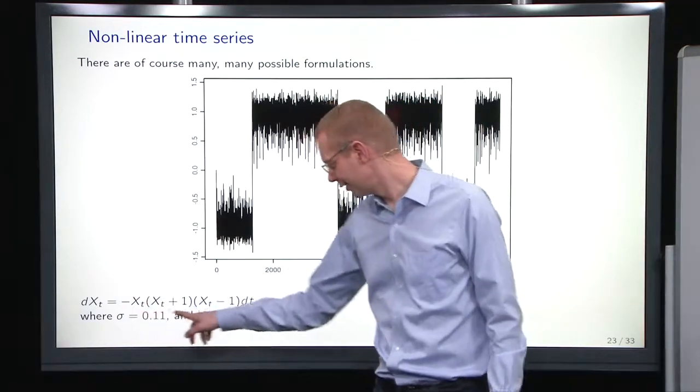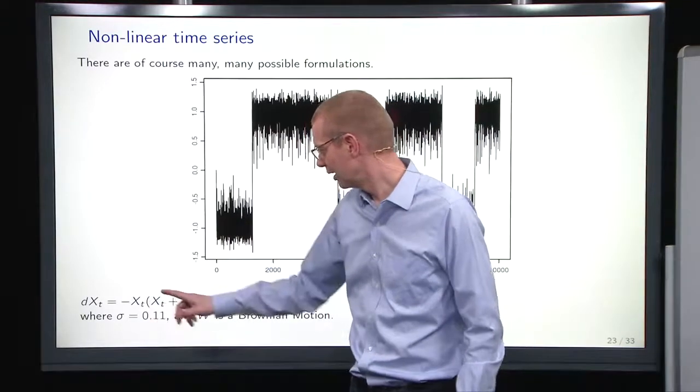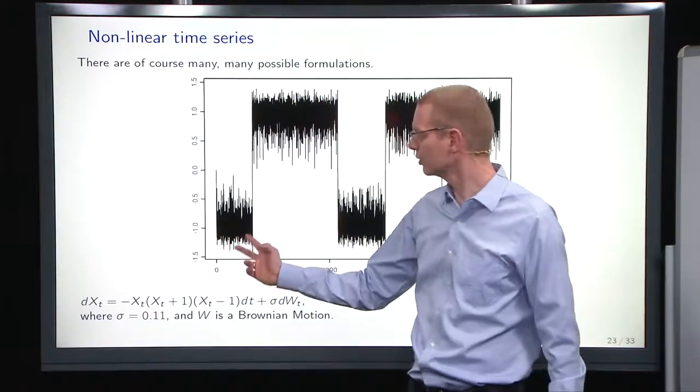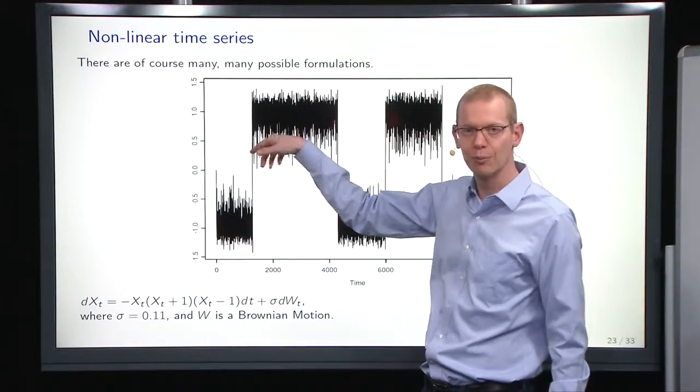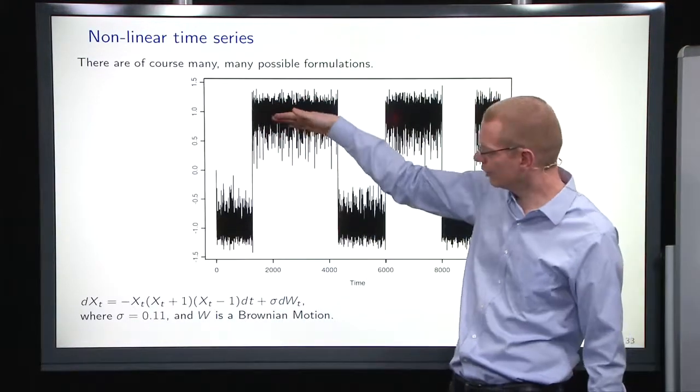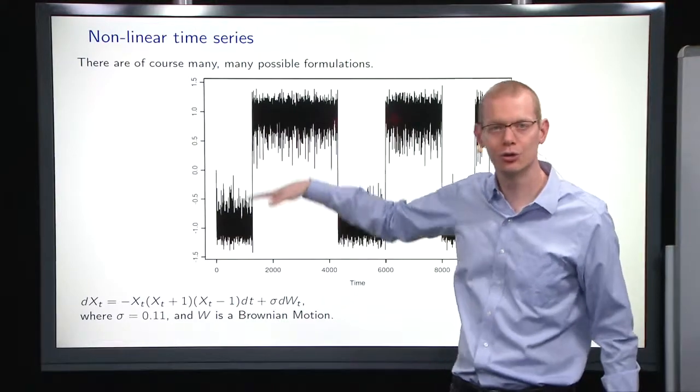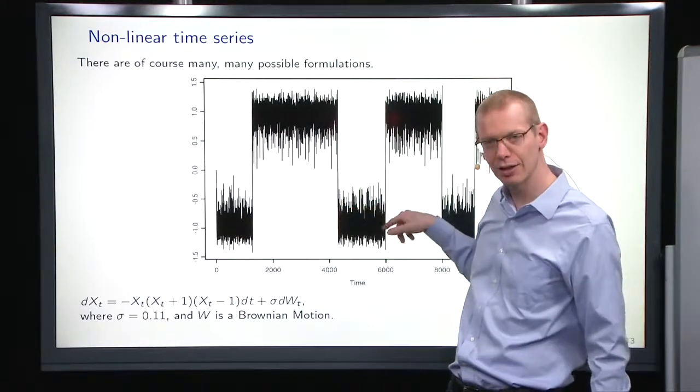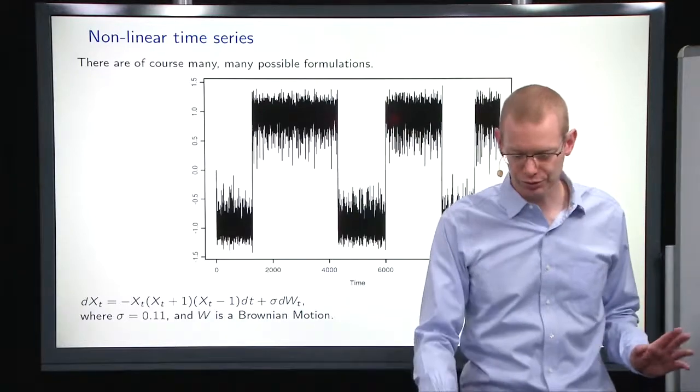So we have a process where the first part here has a tendency to drag towards the center, but whenever you're close to one or minus one, you stay there until you get sufficiently far away to jump to the other state, and then it jumps back and so forth. So that's the process.